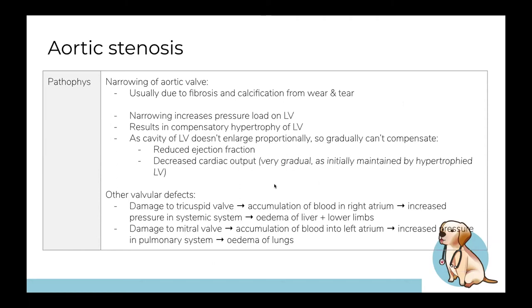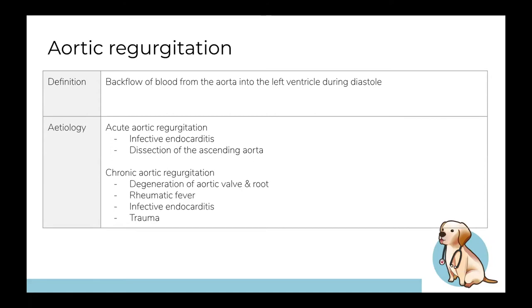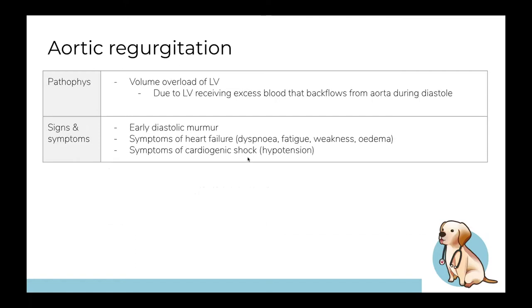Aortic regurgitation is another valvular heart disease, characterized by incomplete closure of the aortic valve. This causes reflux of blood — unlike aortic stenosis where there's obstruction, here the valve doesn't close properly, so every cardiac cycle produces reflux of blood from the aorta back into the left ventricle during diastole. It mainly occurs after bacterial endocarditis or aortic dissection, but chronic causes include congenital bicuspid valve or rheumatic fever.